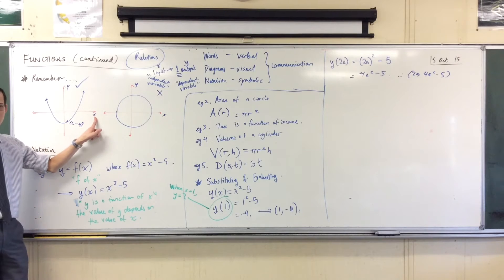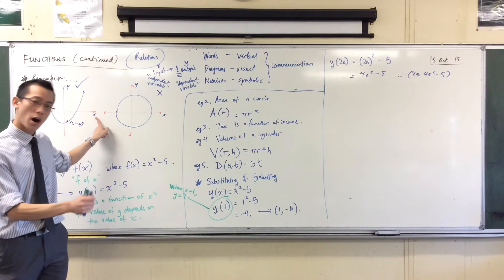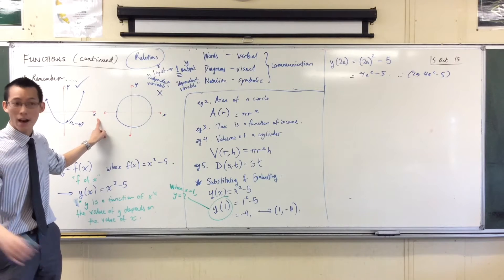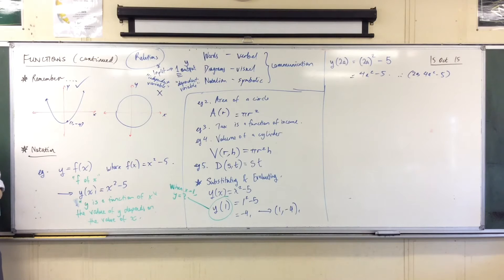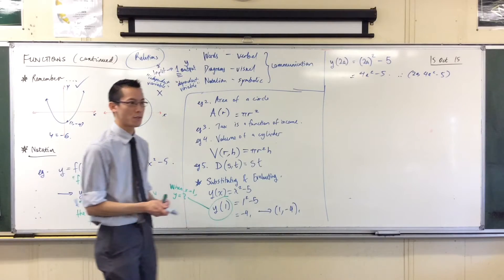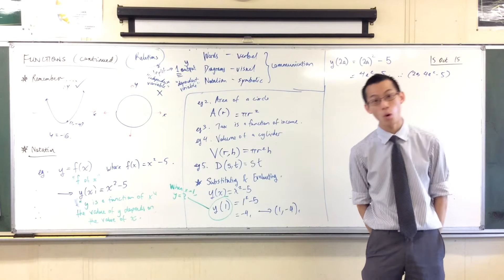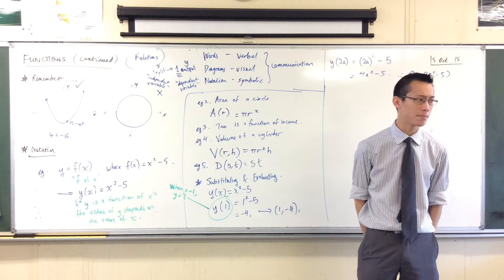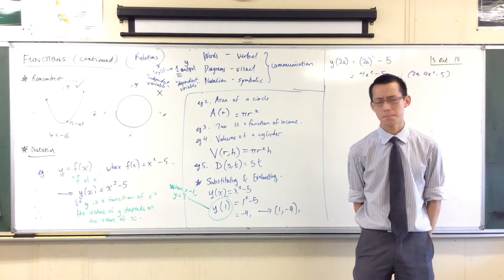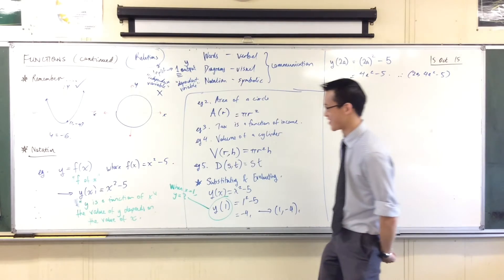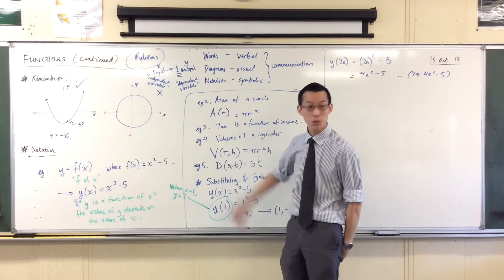No matter what values of X, there are some values of Y, some outputs that you will never ever get. You can try as hard as you like, you'll never get there. For instance, I happen to know that Y equals negative 6, you'll never get there. You can try every single value of X that you want and you'll never get to negative 6 or negative 7 or negative 8.